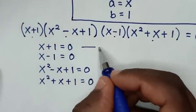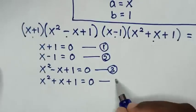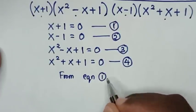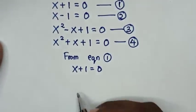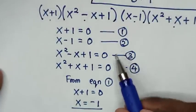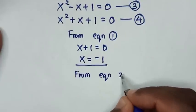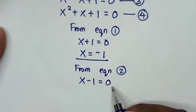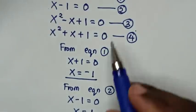We label these as equation 1: x + 1 = 0; equation 2: x - 1 = 0; equation 3: x² - x + 1 = 0; and equation 4: x² + x + 1 = 0. From equation 1, taking 1 to the right side: x = -1. From equation 2, taking -1 to the right side: x = 1.